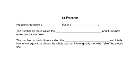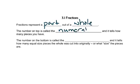In this chapter we'll begin to talk about fractions. A fraction represents a part out of a whole. The number on top is called the numerator and the number on the bottom is called the denominator. The numerator tells how many pieces you have, while the denominator tells how many pieces the original whole was cut into, or the size of the pieces.